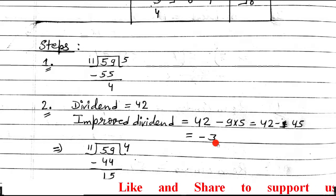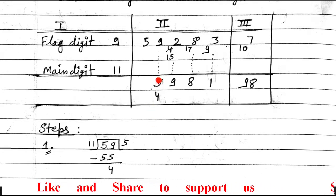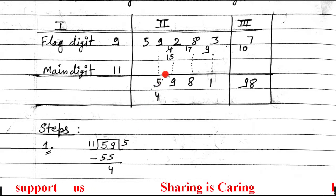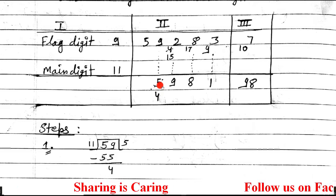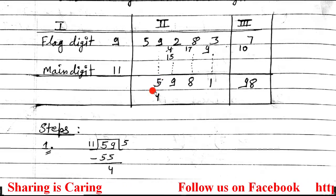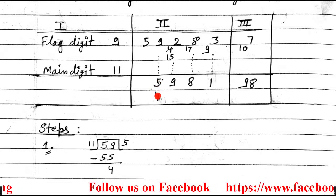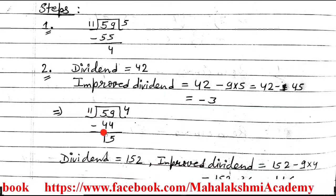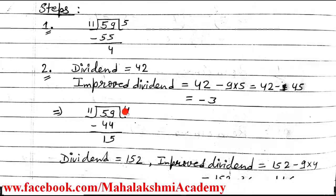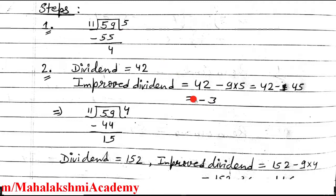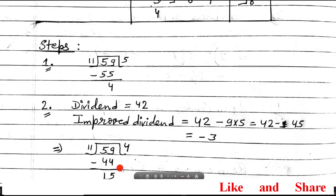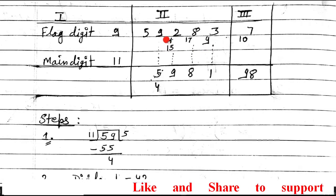Since the improved divider is negative, we have to reduce. Cross it out and write 4 instead of 5, because one less than 5 is 4. From this step onwards we do again: 59 divided by 11 is 4. With quotient 4, 11×4=44, so remainder is 15. Cross out the old remainder and write 15 here. Continue this process until you get a positive improved divider.